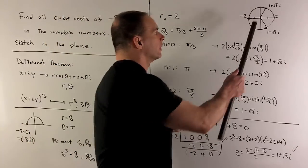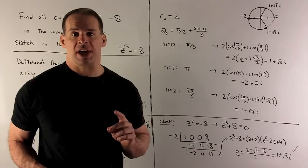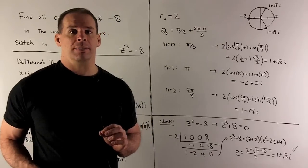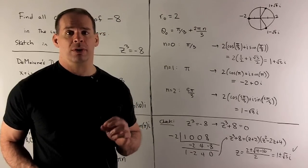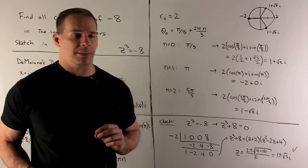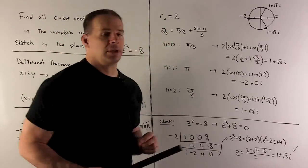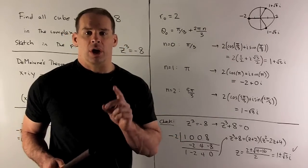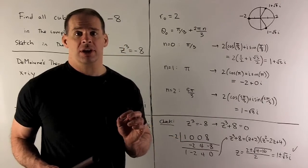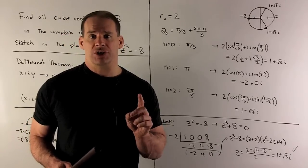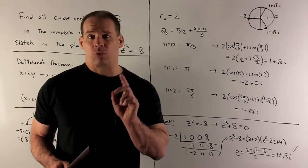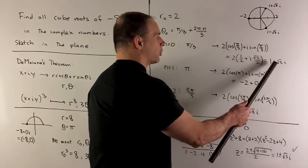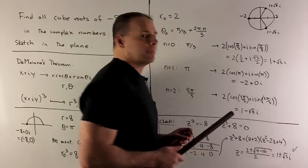For n equals 2, we get 5 pi thirds, which is in the fourth quadrant. Cosine is the same as pi thirds, so 1/2, but sine is negative: minus root 3 over 2. Simplifying, we get 1 minus root 3 i. The sketch shows these three points evenly spaced by 2 pi thirds. As a check, z cubed plus 8 has real coefficients, so non-real roots occur in complex conjugate pairs — and 1 plus root 3 i and 1 minus root 3 i are indeed a conjugate pair.